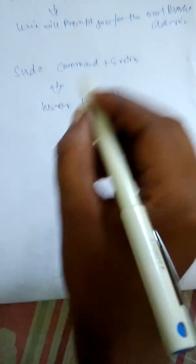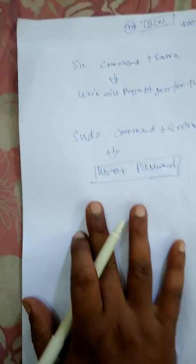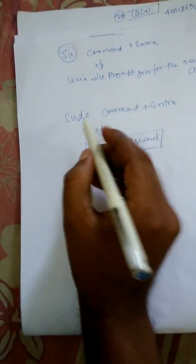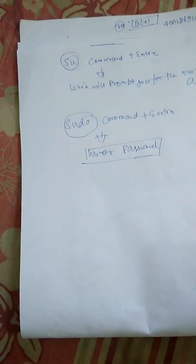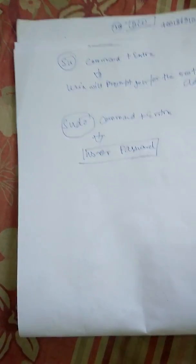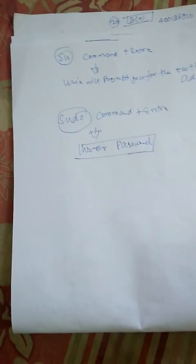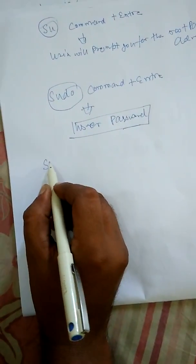So the main difference is: if you are using the su command, Unix will prompt you to enter the root password. If you are using the sudo command, Unix will prompt you to enter the user password that you used to log in to the system. There is also one more difference.